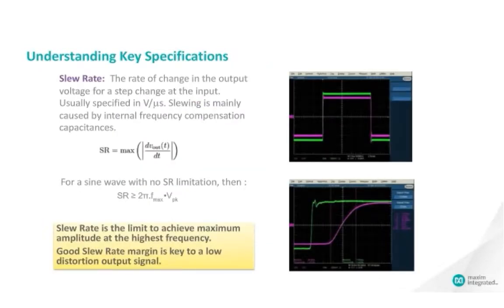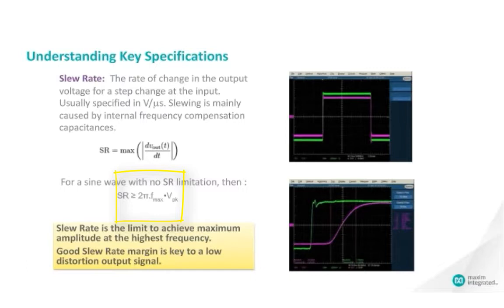Let's review some of the important op-amp specifications. Slew rate is the rate of change in the output voltage for a step change in the input. It's usually specified in volts per microsecond. Slewing is mainly caused by internal frequency compensation capacitances. Mathematically, slew rate is the maximum magnitude of the change in output voltage with respect to time. For a sine wave with no slew rate limitation, the slew rate can be said to be at least equal to 2π times the maximum frequency times the peak amplitude of the waveform.